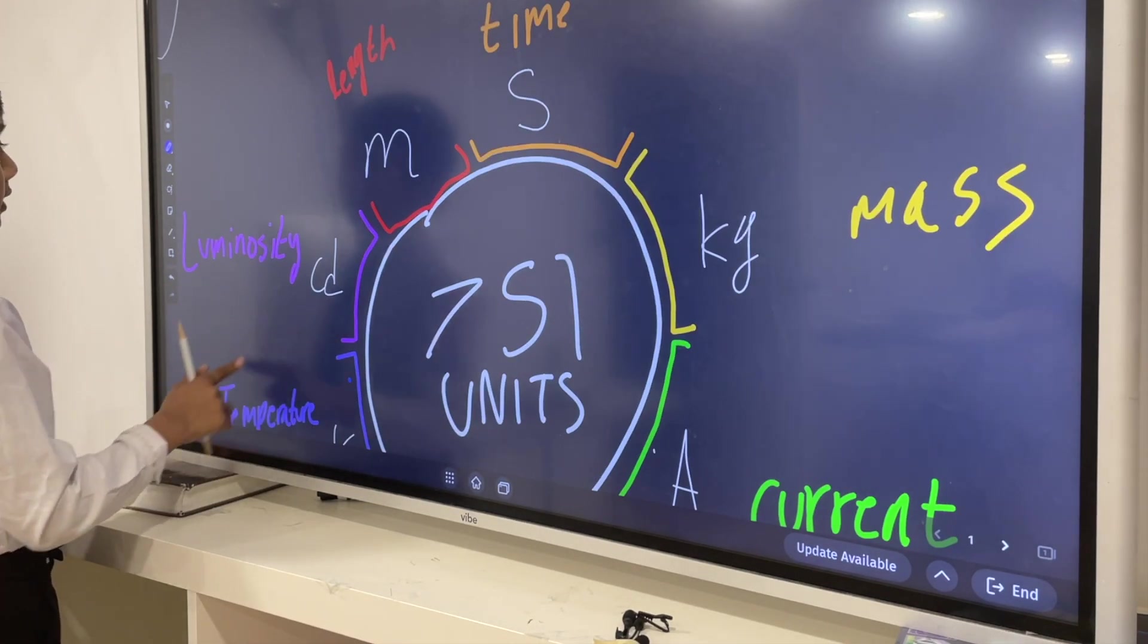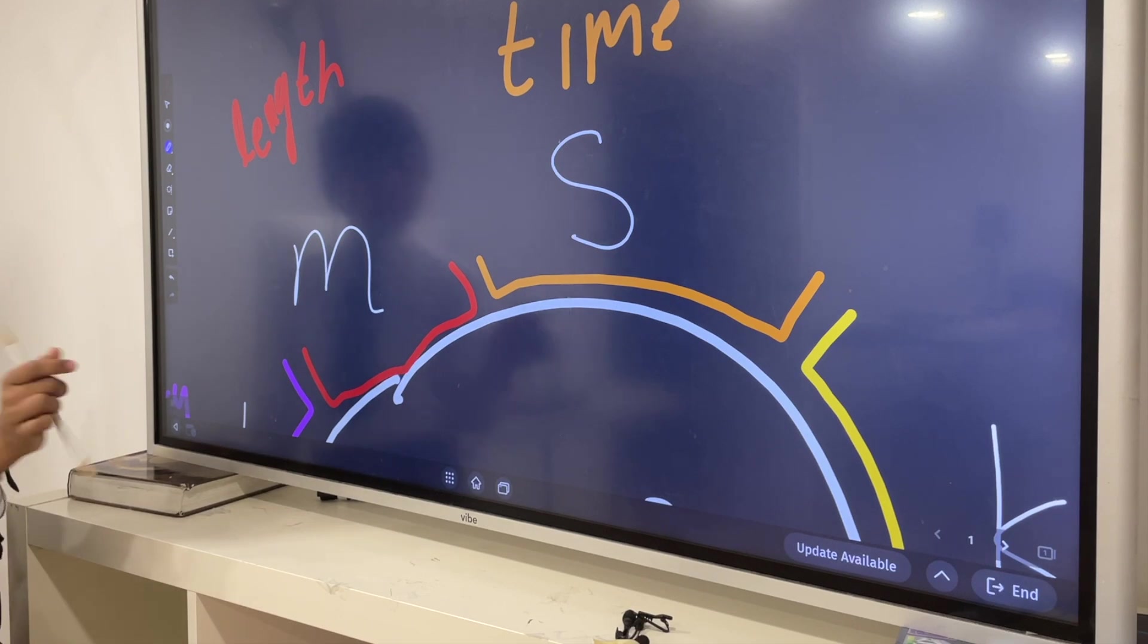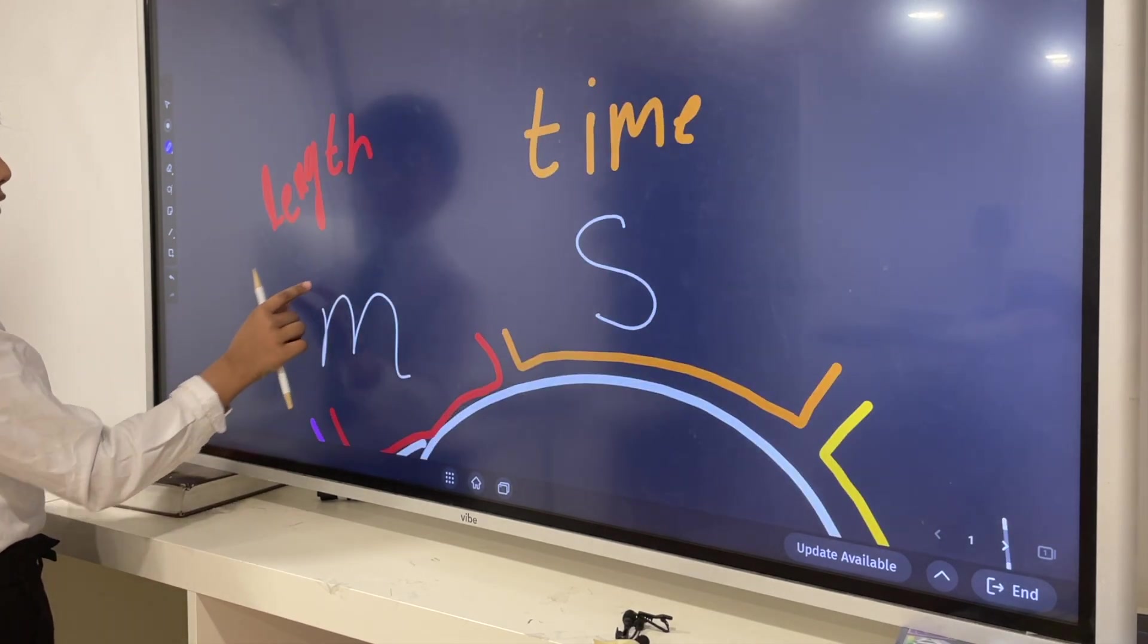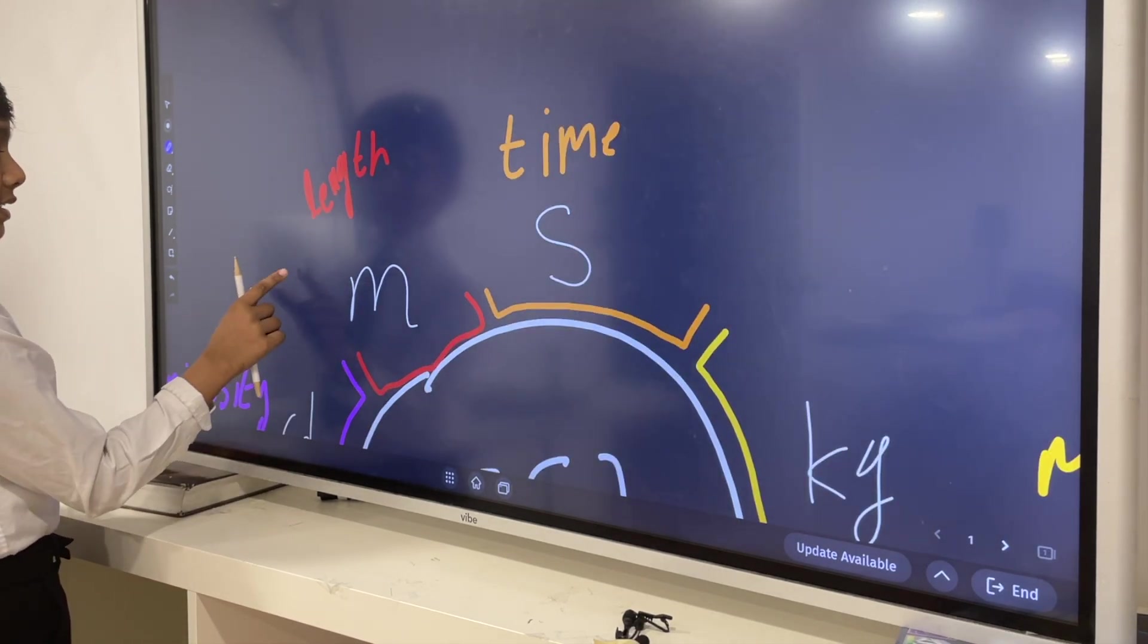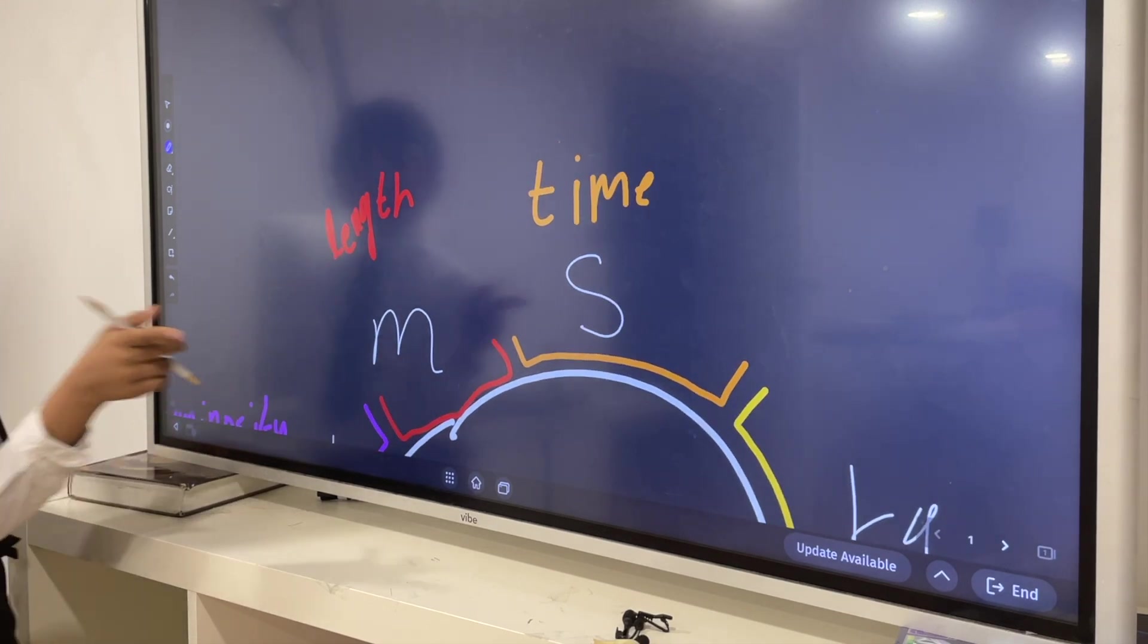Now obviously length is the meter. Now previously it was defined as something in geography, however now it is defined as the distance...